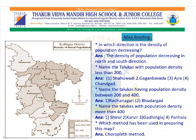Let us do the map reading, students. Based on the index, it becomes very easy to do the map reading. First, in which direction is the density of population decreasing? The density of population is decreasing in the north and south direction. Second, name the Talukas with population density less than 200 — these are Shawwadi, Gagan Bawda, Achra, and Chandgad. Name the Talukas having population density between 200 and 400 — these are Radha Nagri and Budhargad. Name the Talukas with population density more than 400 — these are Shirol, Karver, Kadhi Lilkanj, and Panhala. Which method is used in preparing this map? It is the choropleth method.